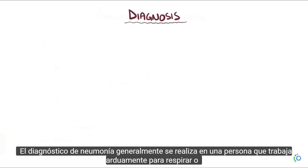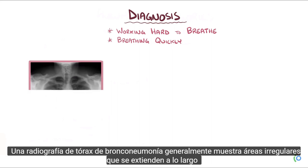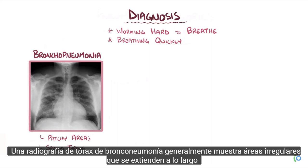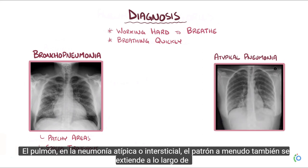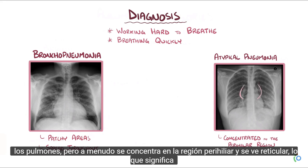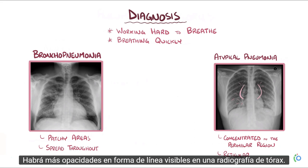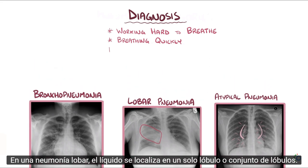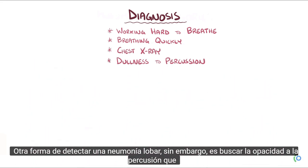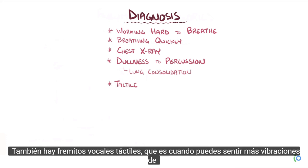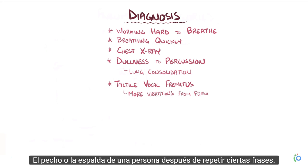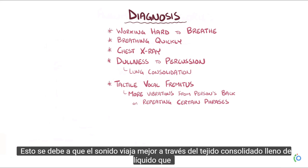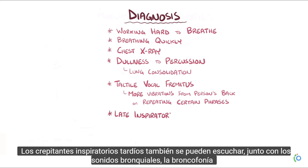Diagnosis of pneumonia is usually made in a person who's working hard to breathe or breathing quickly. A chest x-ray of bronchopneumonia typically shows patchy areas spread throughout the lung. In atypical or interstitial pneumonia, the pattern is also spread throughout but often concentrated in the perihilar region and looks reticular, with line-shaped opacities. In lobar pneumonia, fluid is localized to a single lobe. Additional diagnostic signs include dullness to percussion suggesting consolidation, tactile vocal fremitus, late-inspiratory crackles, bronchial breath sounds, bronchophony, and egophony.